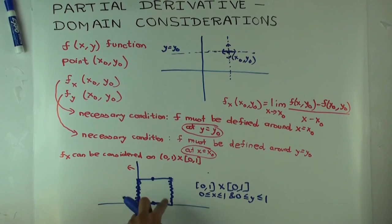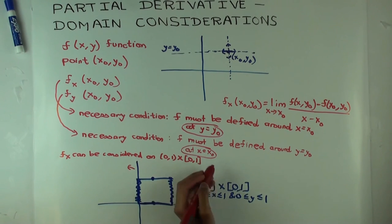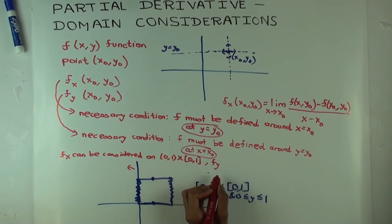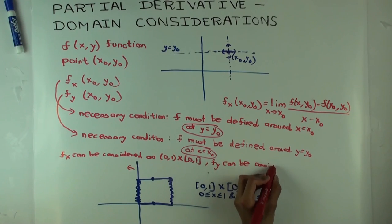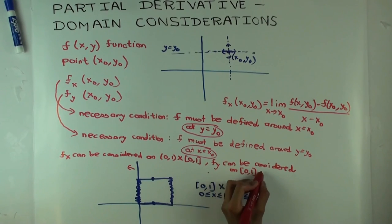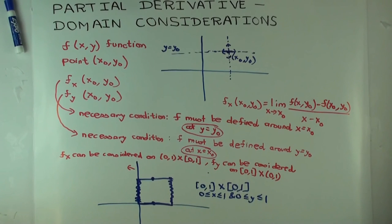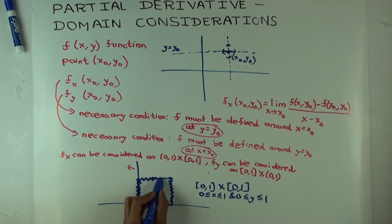What about f sub y? The two horizontal borders are the ones you exclude. So f sub y can be considered on the closed interval [0,1] cross the open interval (0,1). Because we're differentiating with respect to y, we need the y coordinate to be in the interior of the interval, so it's the top and bottom boundaries that we have to exclude.